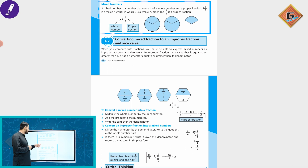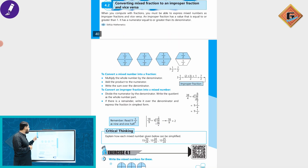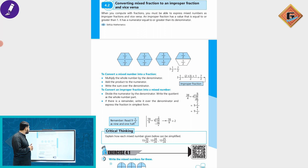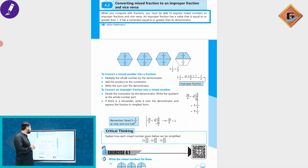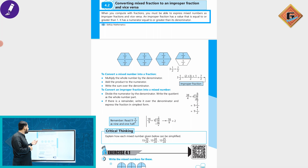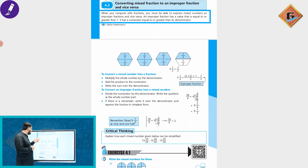Now we look at converting a mixed number into an improper fraction and vice versa. When you compute with fractions, you must be able to express a mixed number as an improper fraction — a value equal to or greater than 1, whose numerator is equal to or greater than its denominator.